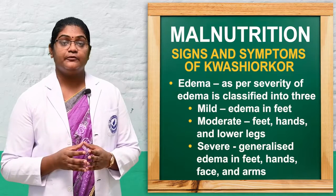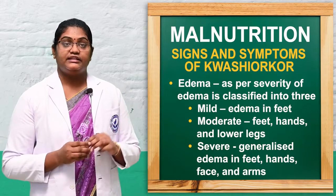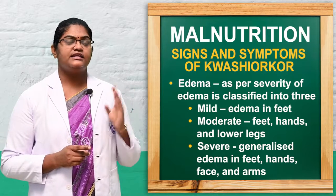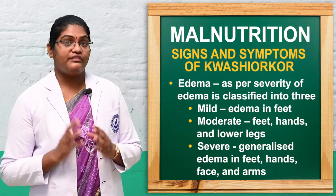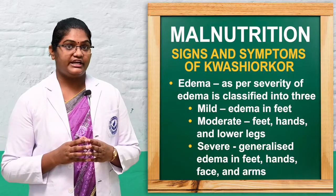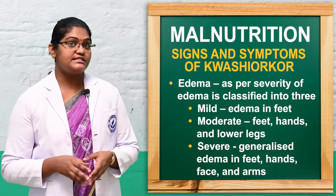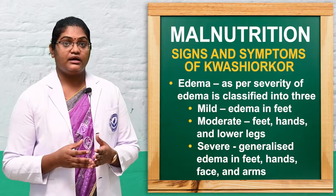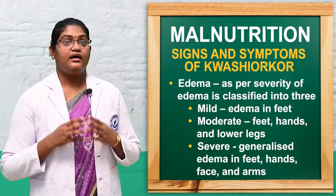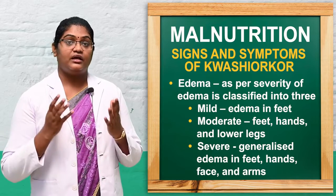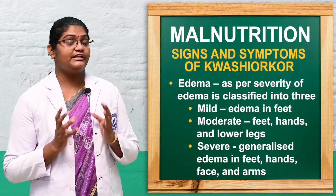A key symptom of kwashiorkor is edema, which is classified by severity into three levels: mild, moderate, and severe. In mild cases, edema occurs on both feet. In moderate cases it appears on both feet, hands, and lower legs. In severe cases it is generalized edema occurring on the face, hands, arms, legs, and feet.